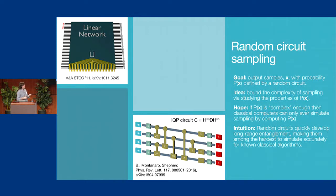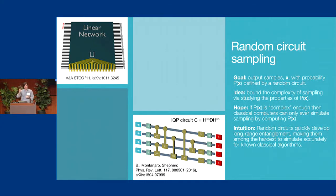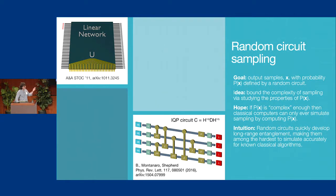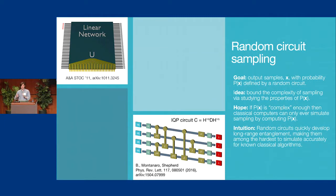The idea is to bound the complexity of this sampling process by studying the properties of P(x). What's changed in the last few years is that we've been able to develop a series of techniques to say things about the complexity of the output of a quantum circuit with respect to notions of error which are actually reasonable for experimental quantum computing. Random circuits are a good candidate because they quickly generate a lot of long-range entanglement. Non-random circuits like Clifford circuits rapidly build up entanglement but are very structured and easy to simulate; randomized circuits don't have as much structure, making them harder for classical computers to simulate.